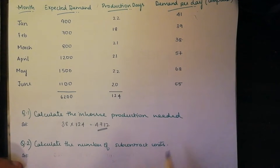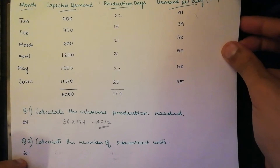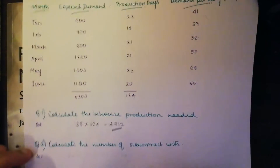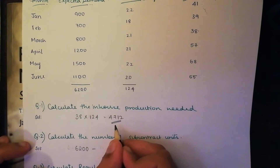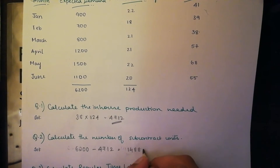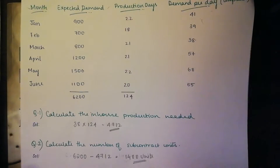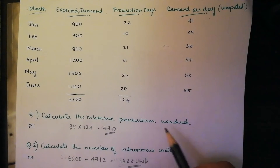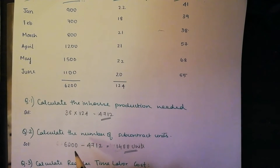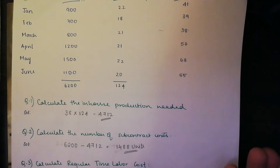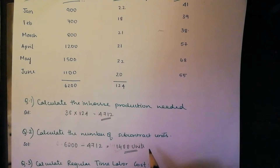Our second question is to calculate the number of subcontracted units — how much we will be outsourcing. We look at our expected demand total, which is 6,200. You take that total and deduct our in-house production, and you will be left with 1,488 units. So by taking the total minus the in-house production we get the number of units to be subcontracted: 6,200 minus 4,712 equals 1,488 units.